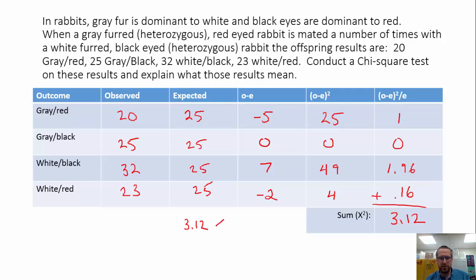And we are definitely less than 7.82. So 3.12 is less than 7.82. And this is what I would like you to do as far as an answer goes. So this value that we got is less than the critical value, which means that there is no statistically significant difference between our observed and expected results. So based on this data, the observed results support this hypothesis that we were dealing with heterozygous, homozygous recessive, heterozygous, and homozygous recessive.